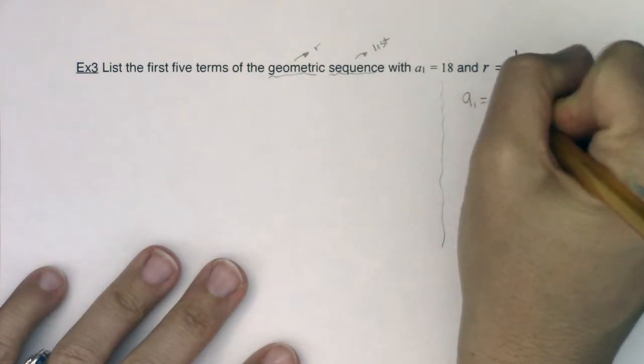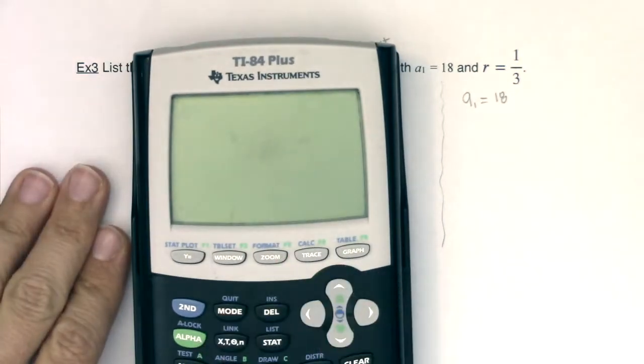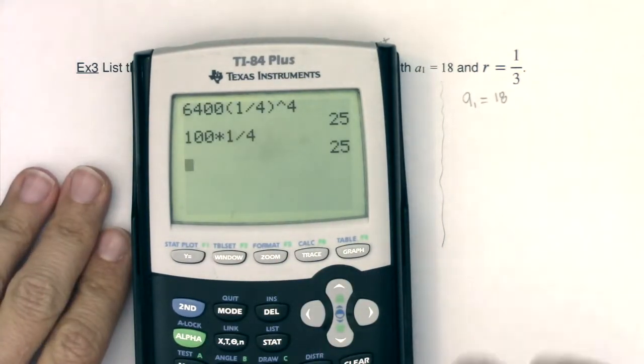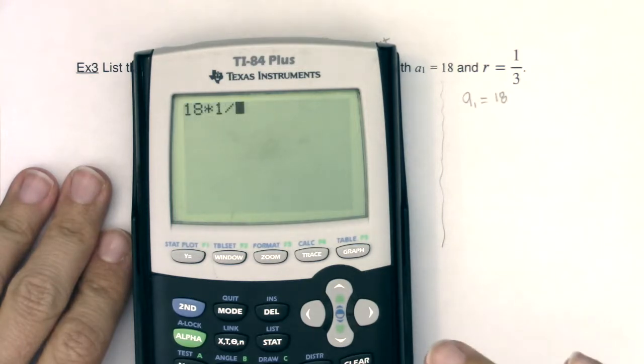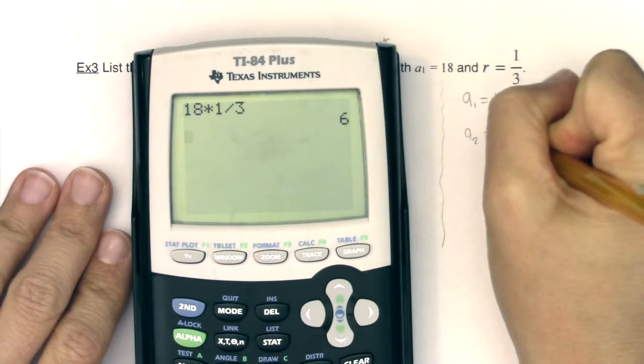So a sub 1 would be 18. Alright, and this is how we could do this on our calculators. Again, quick and dirty. So we would sit here and say 18 times 1/3. Oops, except you would type in the 3. There we go. 18 times 1/3. So you would tell me then that a sub 2 was 6, right?